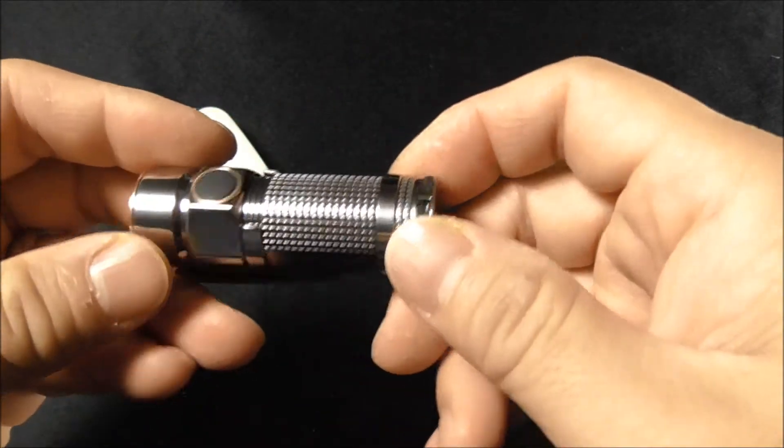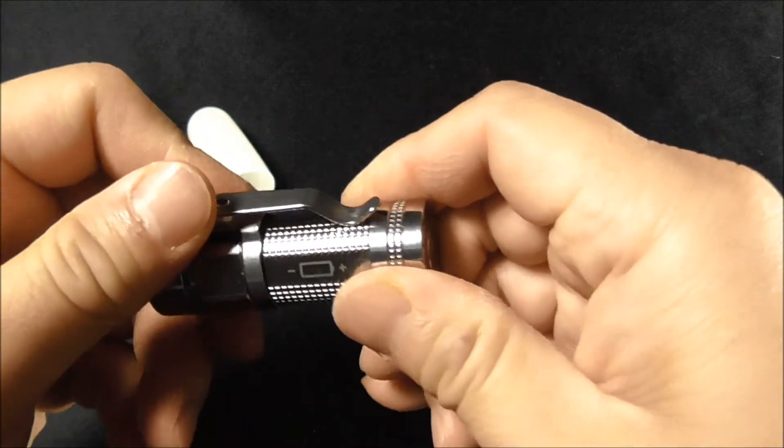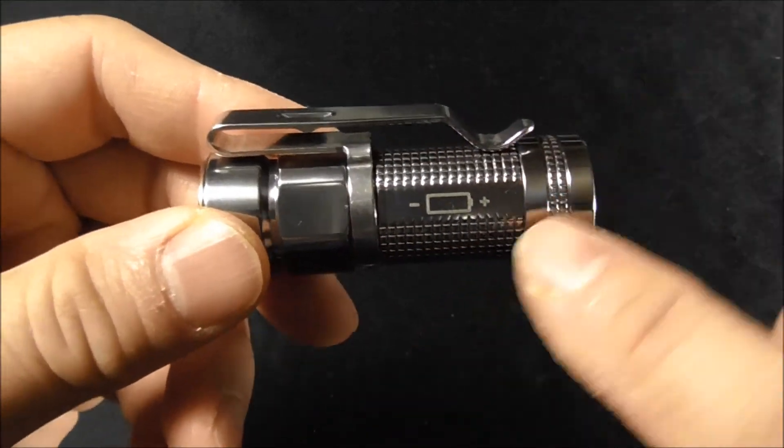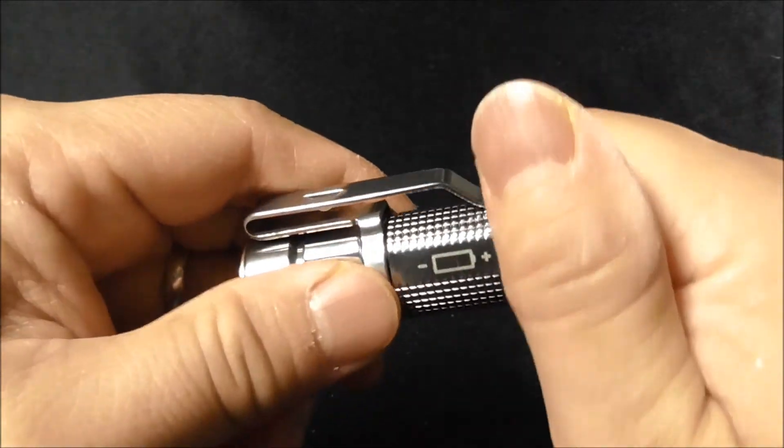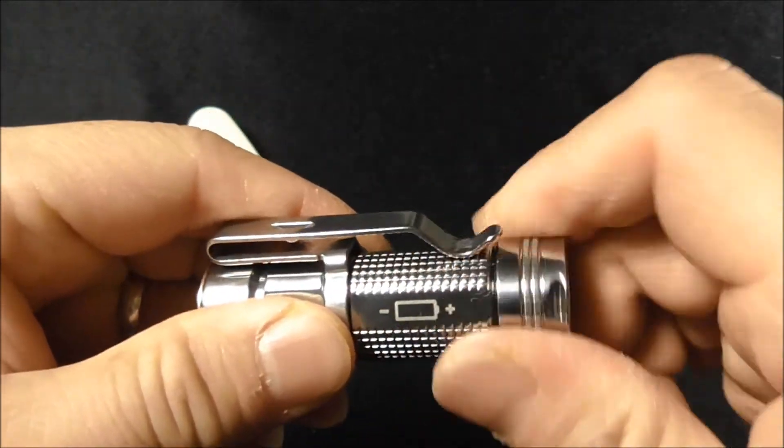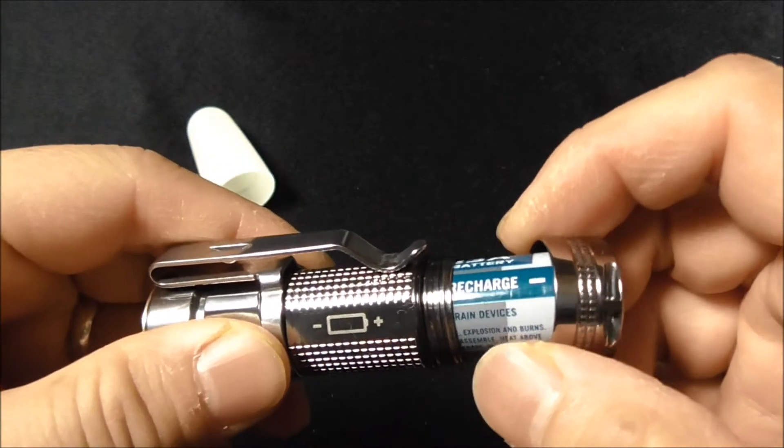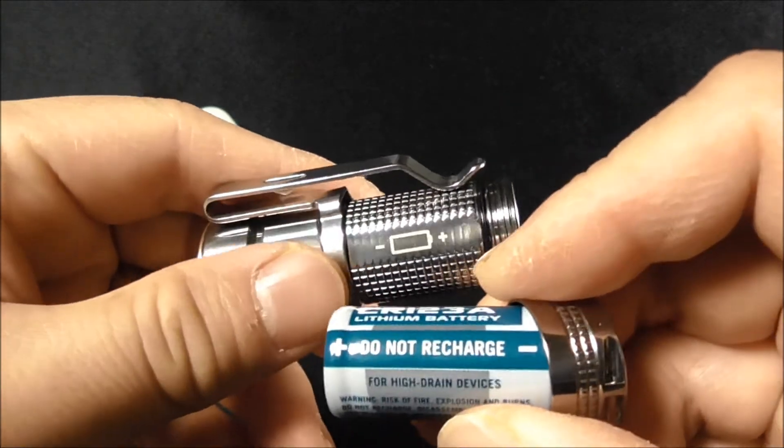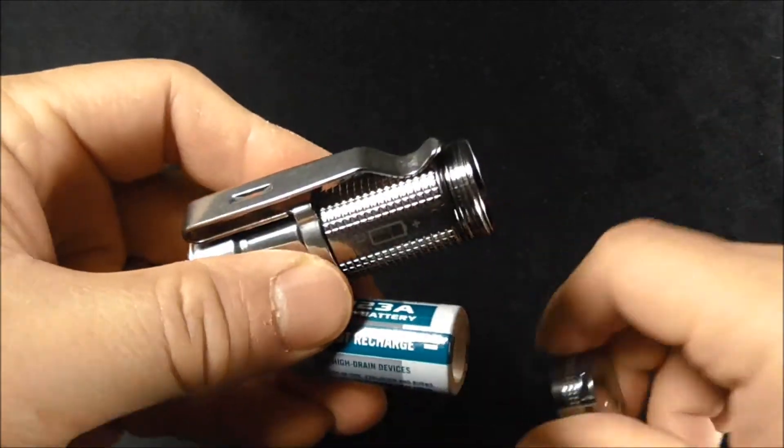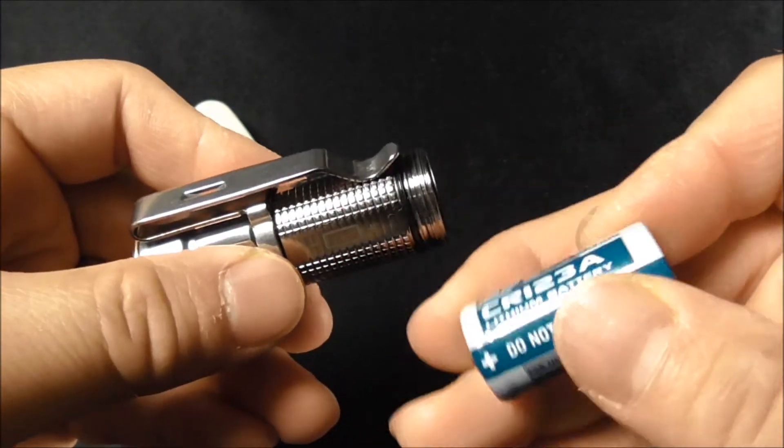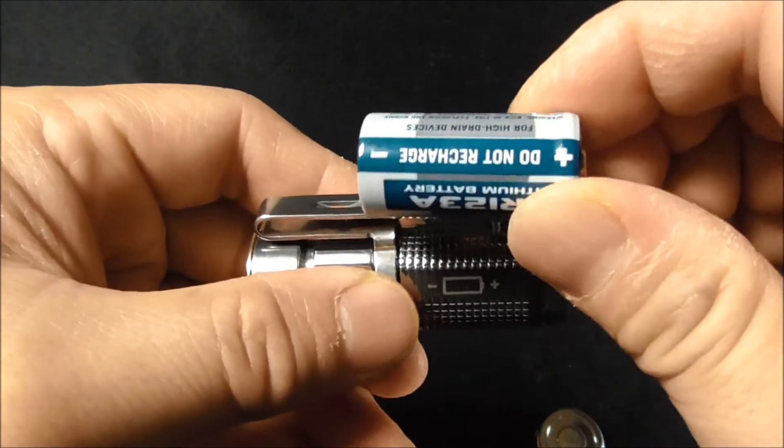It also states on the flashlight that the polarity of the battery should be positive towards the end of the tail cap and the negative should be towards the headlight. This is kind of weird because most flashlights have the positive polarity of the battery towards the head of the flashlight and the negative towards the tail cap.